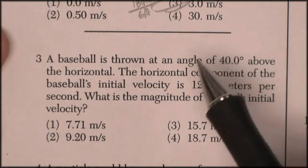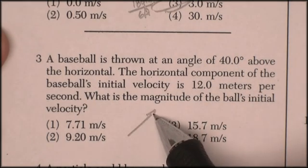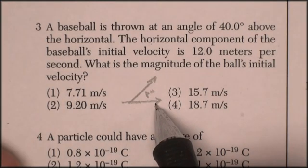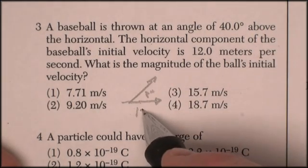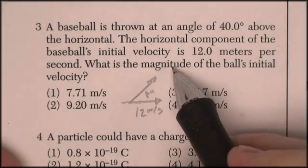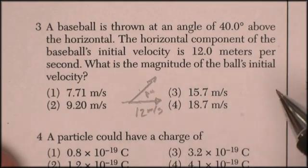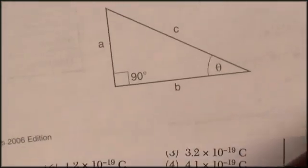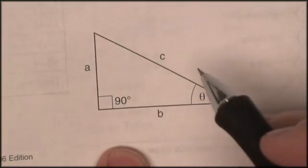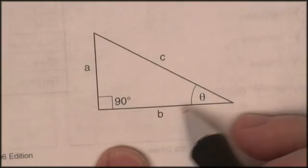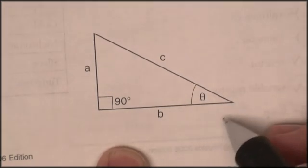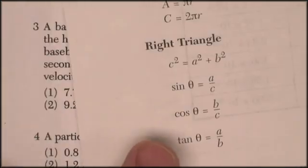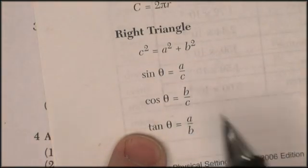Question three. A baseball is thrown at an angle of 40 degrees above the horizontal. The horizontal component of the ball's initial velocity is 12 meters per second. What's the actual velocity? So we're looking for the hypotenuse where the angle is 40 degrees. And on your formula sheet, you've got this triangle. So they're giving you the adjacent side, the angle, and the hypotenuse. So we want one of the equations that involves C, B, and theta.